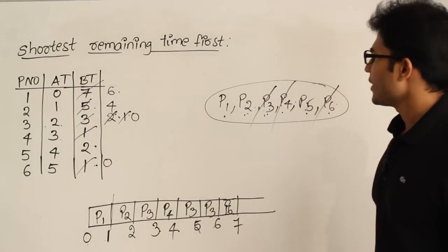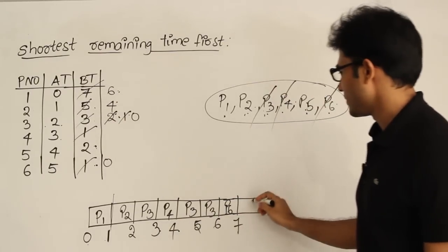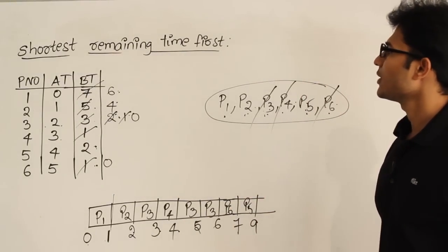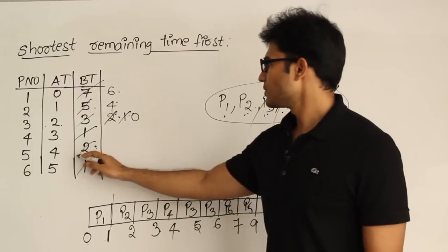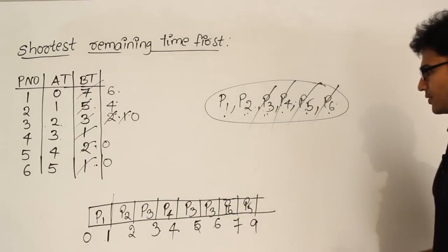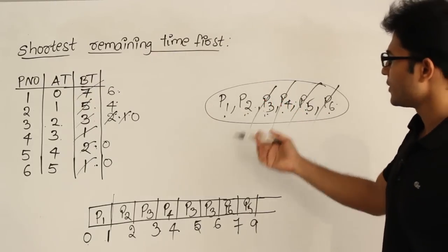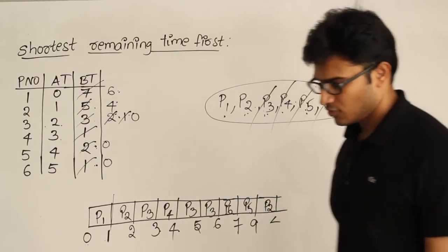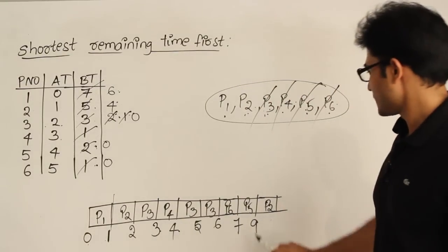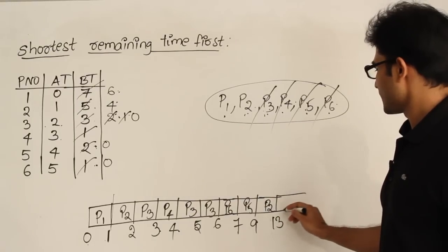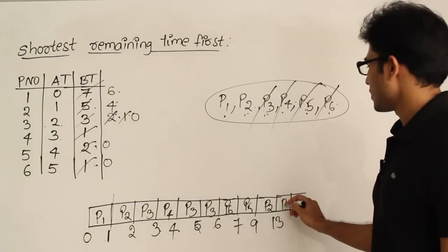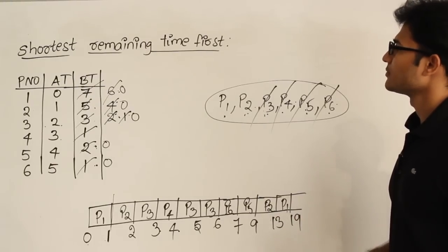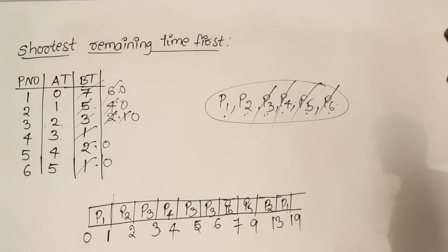P6 is done. Now I have P5, P1, and P2 remaining. P5 is picked next with burst time 2, finishing at time 9. Then among P1 and P2, the shortest is P2, which is scheduled from time 9 and finishes at time 13 (9 + 4). Finally P1 is scheduled last and runs for 6 units, finishing at time 19.